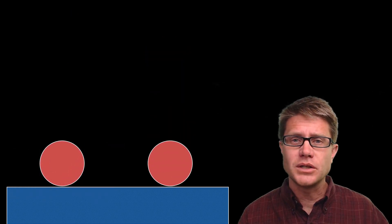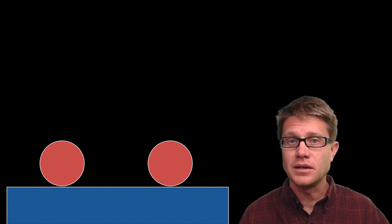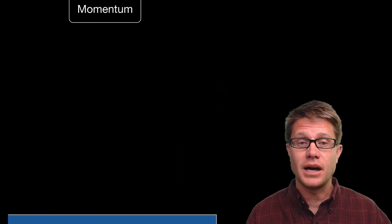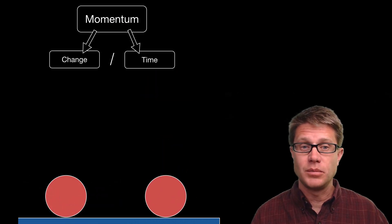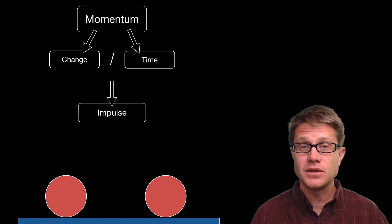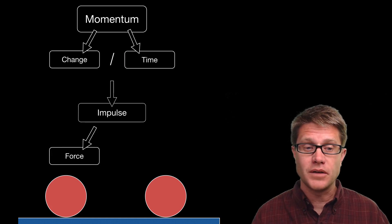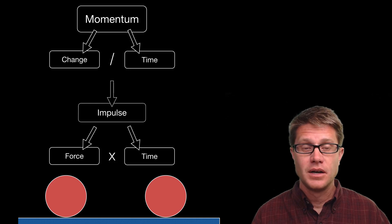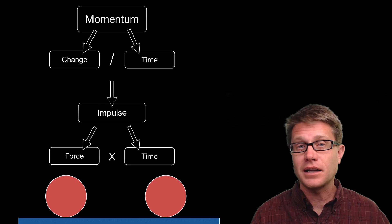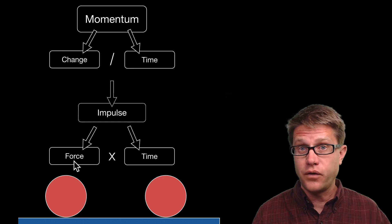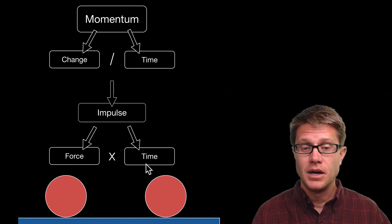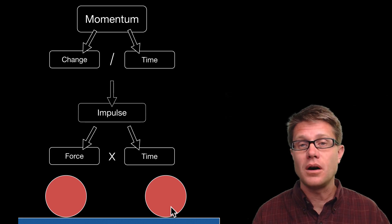So what is different in these two spheres as they fall to the table? It is the time over which they interact with the table. The one on the right is slowing down over a longer period of time, and that means it is applying less force to the table. So momentum will change over time. The impulse is the same for both, but in one sphere we get a really large force over a short period of time, and in the other we get a small force over a long period of time.